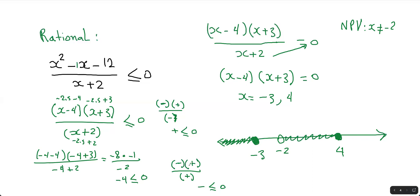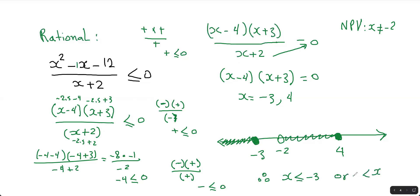Let's take 5: 5 minus 4 is positive, 5 plus 3 is positive, 5 plus 2 is positive. Positive times positive divided by positive is positive — not less than or equal to 0, so it's false and I don't shade there. The solution is x is less than or equal to negative 3, or x is between negative 2 (open circle) and 4 inclusive. And that is how you deal with those different types of functions when it comes to inequalities. Thanks for watching, see you next time.